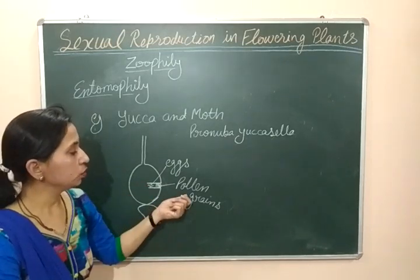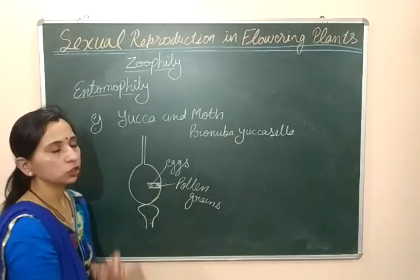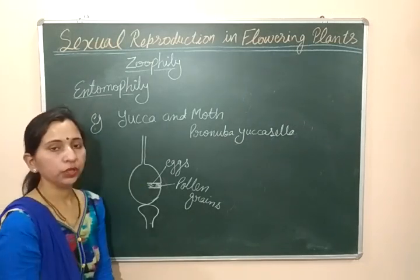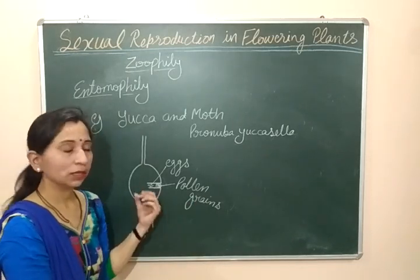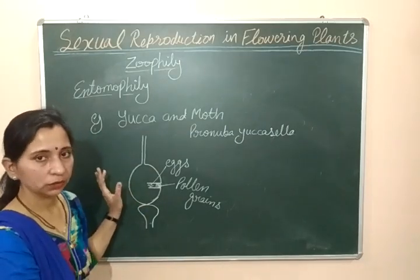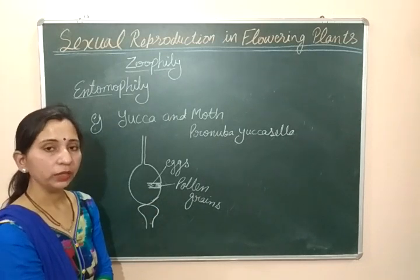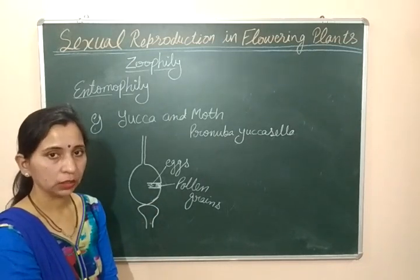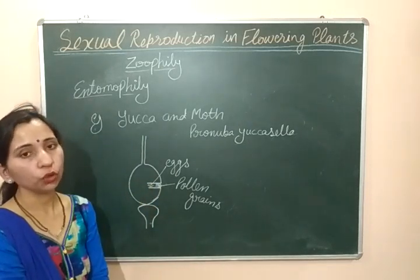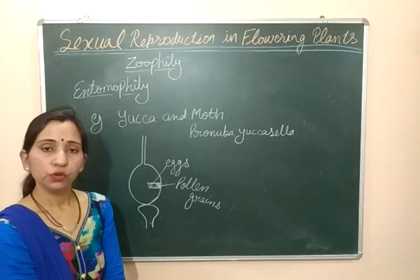To lay its eggs, the moth makes a hole inside the ovary and deposits the eggs there, then closes the hole. What happens is that the pollen grains are very close to the egg which is present inside the ovary. This is the benefit for the flower — pollination is achieved. And for the moth, when the eggs hatch into larvae, the larvae gain food from the ovary and can grow easily.